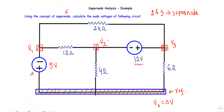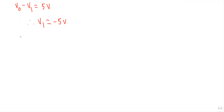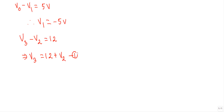Between node number two and node number three, the positive terminal of the 12 volt source is connected at node number three and the negative terminal at node number two. That means V3 is greater than V2, and the voltage difference V3 minus V2 equals 12 volt. So equation number one: V3 = 12 + V2.